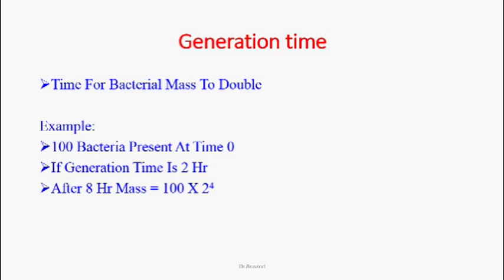Generation time is the time for bacterial mass to double — the time for one bacterium to become two by binary fission. For example, if 100 bacteria are present at time zero and the generation time is two hours, then after eight hours (four generations), the count is 100 × 2⁴ = 100 × 16 = 1,600 organisms.